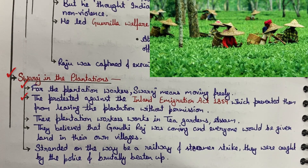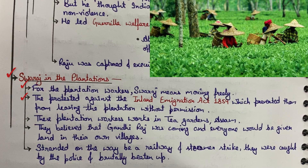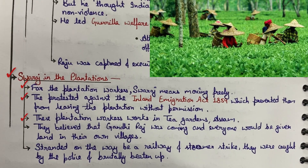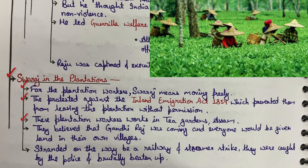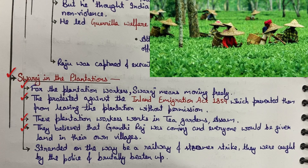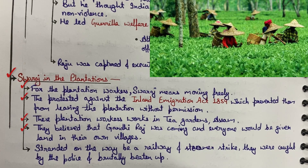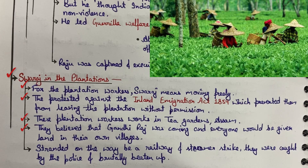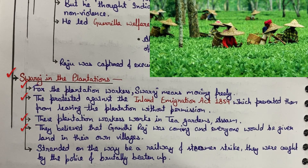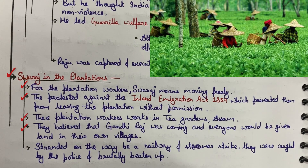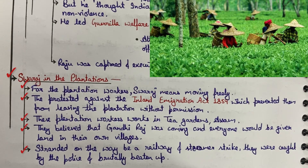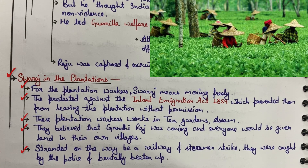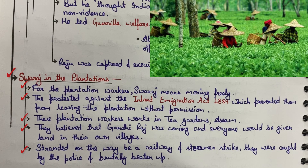These plantation workers in Assam's tea gardens believed that Gandhi Raj was coming and everyone would be given land in their own villages. They believed the non-cooperation movement would get them land in their towns. So they left their tea gardens, but standing on the way — at the railway and steamer — they were caught by the police and brutally beaten up.